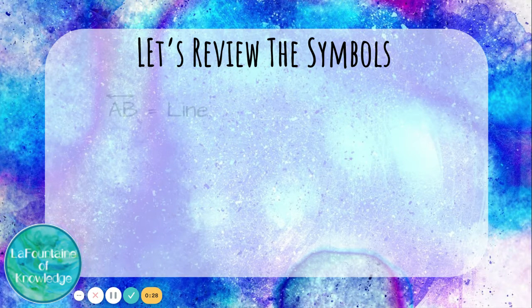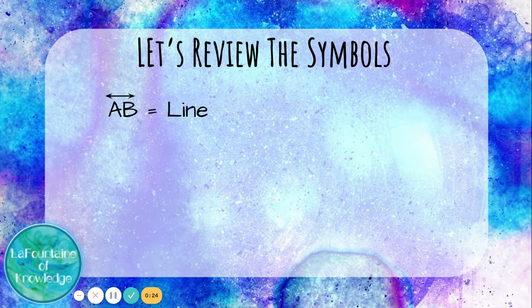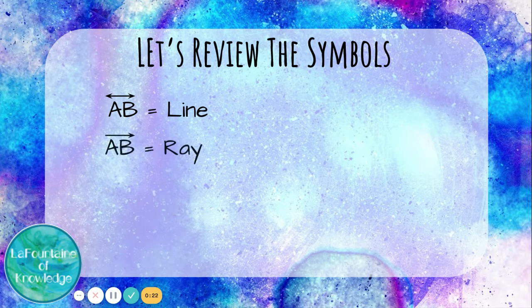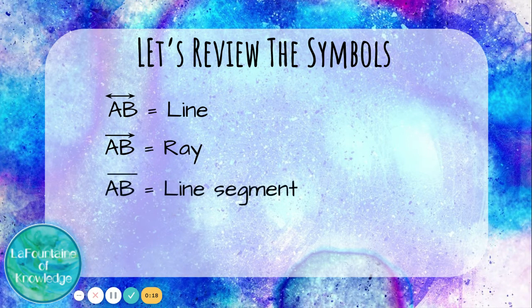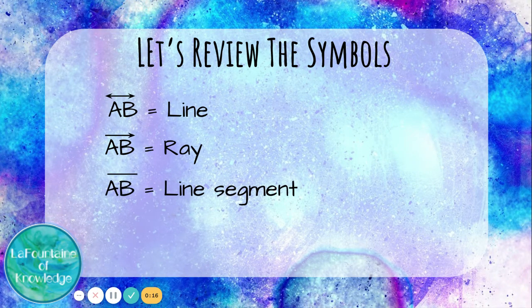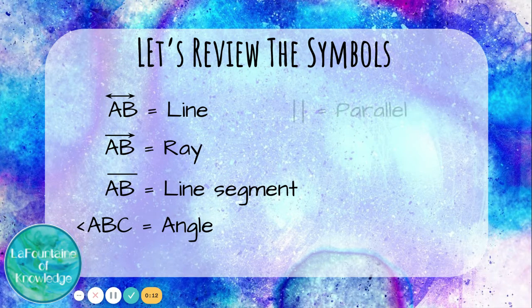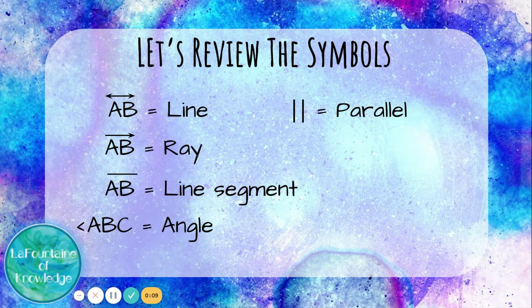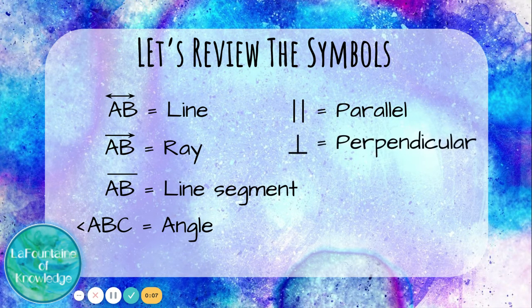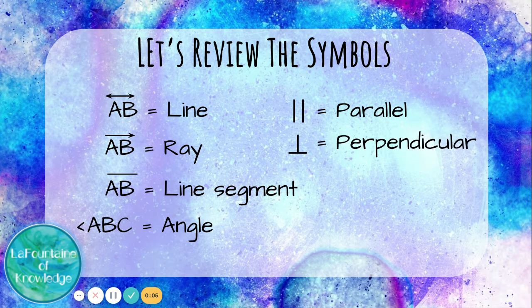Let's review the symbols. A little line above the letters with two arrows is the symbol for line. A ray only has an arrow on one end. A line segment doesn't have any arrows. The sign for angle just looks like a little angle. Parallel looks like two parallel lines. And perpendicular looks like a pair of perpendicular lines.